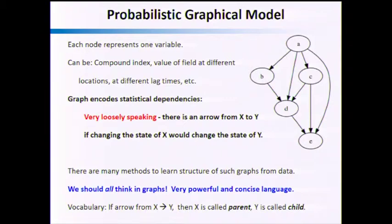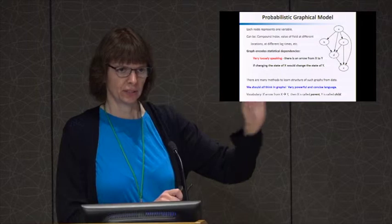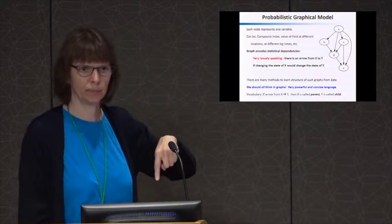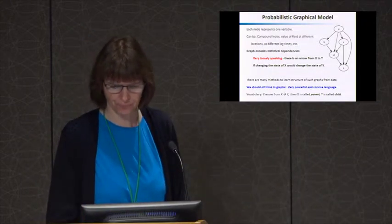Very loosely speaking, there is an arrow from x to y if changing the state of x would change the state of y in my system — kind of like causality. That's what I'm aiming for. We call this a directed acyclic graph. It's directed because each edge has an arrowhead, and acyclic because you can't have loops — if you follow the arrow directions, you can never get back to node a. In climate science you usually do have feedback loops, so the trick is to have separate variables for the original variable and several lag variables, making them different variables in time so you can deal with feedback loops.